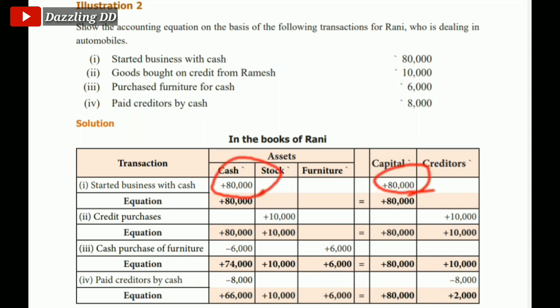Cash is plus 80,000 and Capital is plus 80,000. Why do we put this plus? There is a business and you have to invest in it. The investment is added. So Cash is plus 80,000 and Capital is plus 80,000. The equation is balanced — both values are 80,000.